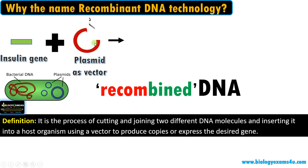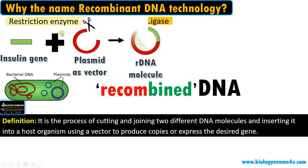What we do is cut this vector using a restriction enzyme. They are called molecular scissors that make specific cuts at recognition sites in a DNA molecule. The next step is inserting our gene of interest into the vector, and the nick is sealed by ligase.